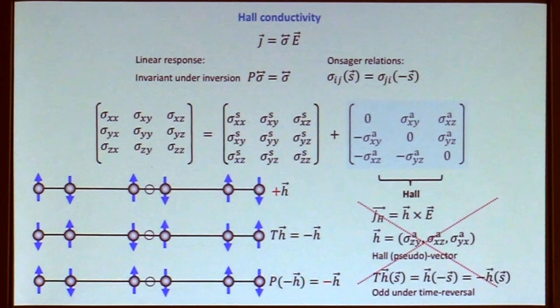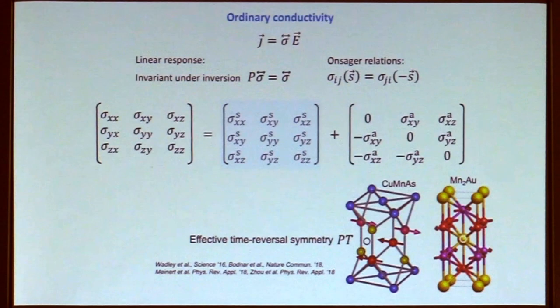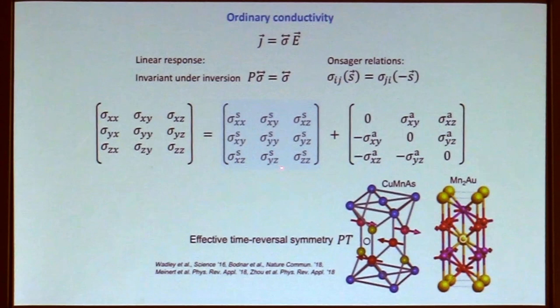In fact, many collinear antiferromagnets have this property: if you do time reversal and space inversion together, you recover the original magnetic lattice — the so-called PT symmetry. CuMnAs, Mn₂Au, and MnTe are materials in which much antiferromagnetic spintronics has been performed, and they have exactly this PT symmetry. So the only option for these materials is to use the ordinary resistance, since the Hall effect is not available.